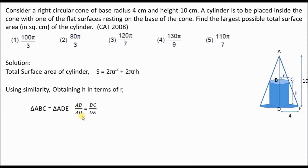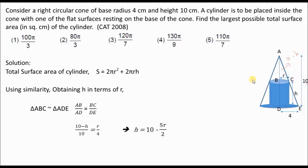Using similarity, AB divided by AD equals BC divided by BE. AB is the height of the smaller right angle triangle, which equals the total height 10 minus the cylinder height h, so AB = 10 − h. AD is 10, BC is r, and BE is 4. On simplifying, I get h = 10 − 5r/2.